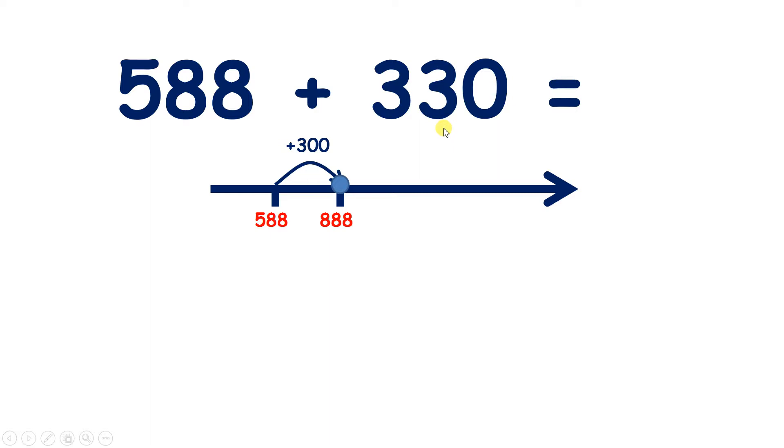And now we need to add 3 tens. So if we add 2 tens, that takes us to our next 100, so takes us to 908. And now we need to add 1 more ten, and that takes us to 918. So we added 20, then added 10, so we added 30 altogether, and our answer is 918.